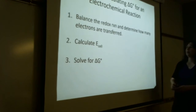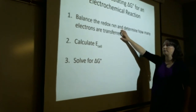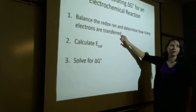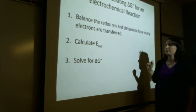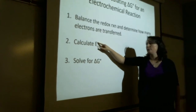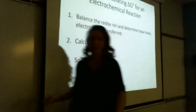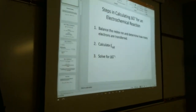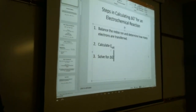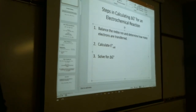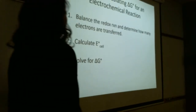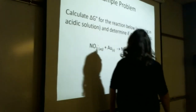So the process is: balance the redox reaction just like we did last week, figure out how many electrons get transferred, calculate E°cell — there should be a degree sign because this is under standard conditions. E-cell without the degree sign means non-standard conditions, which we'll also talk about today. Then solve for delta G.